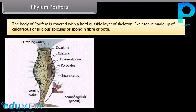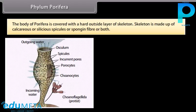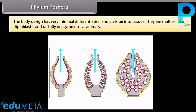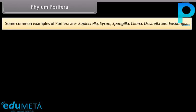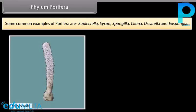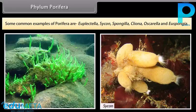The body of Porifera is covered with a hard outside layer of skeleton. Skeleton is made up of calcareous or siliceous spicules or spongin fiber or both. The body design has very minimal differentiation and division into tissues. They are multicellular, diploblastic, and radially or asymmetrical animals. Some common examples of Porifera are Euplectella, Sycon, Spongilla, Cliona, Oscaryella, and Euspongia.